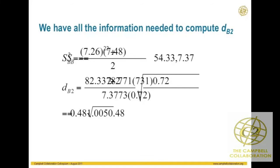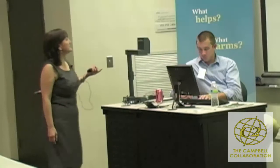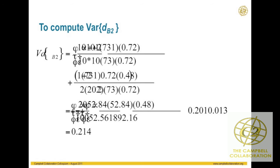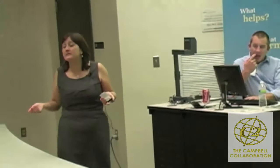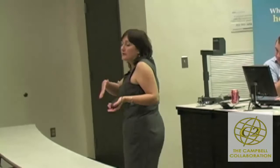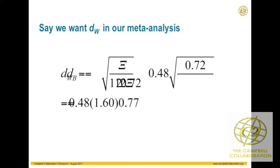With the adjustment that includes the ICC and my assumed equal cluster size of 73 students per cluster, I get an effect size of 0.48. I always warn that I'm bad at arithmetic, so this could be wrong. We can see that what goes into this variance are the number of clusters, the assumed equal sample size within clusters, and the ICC.